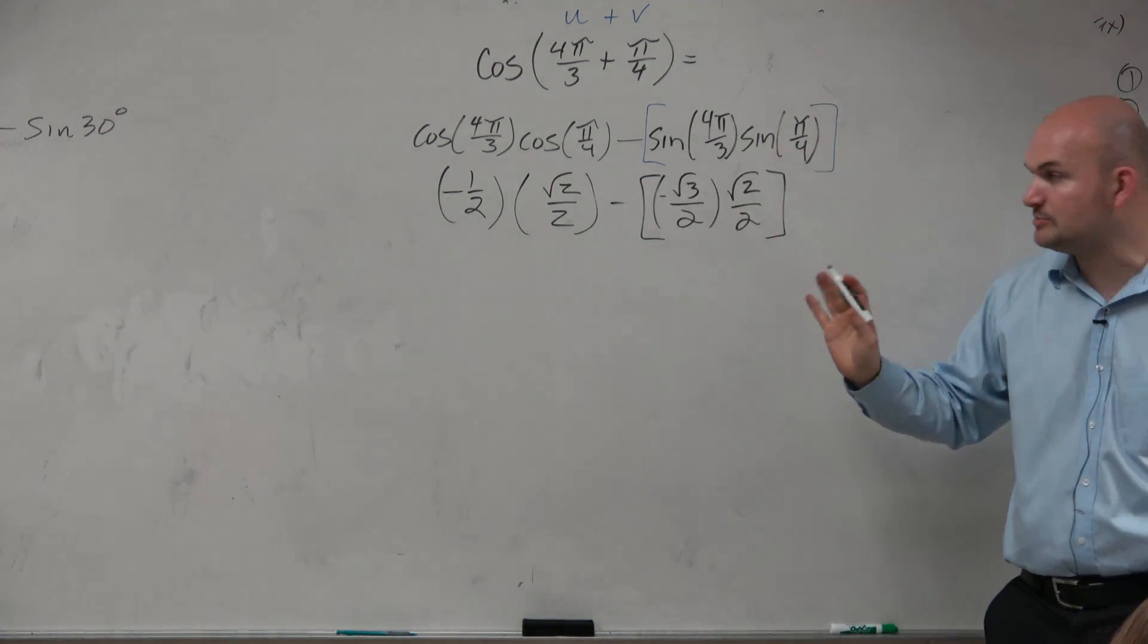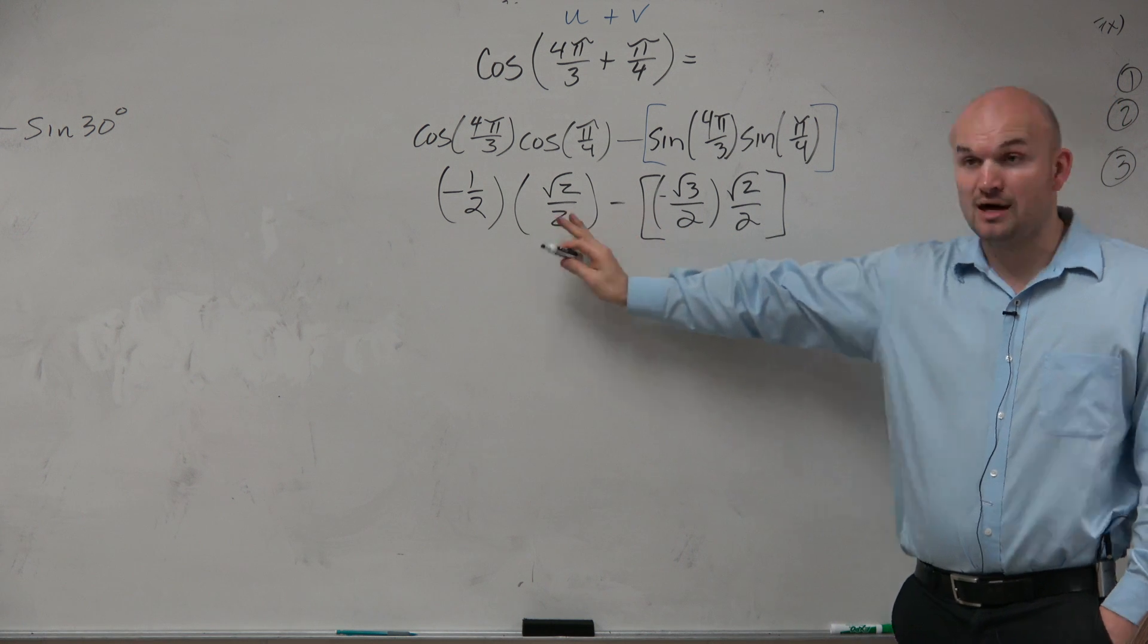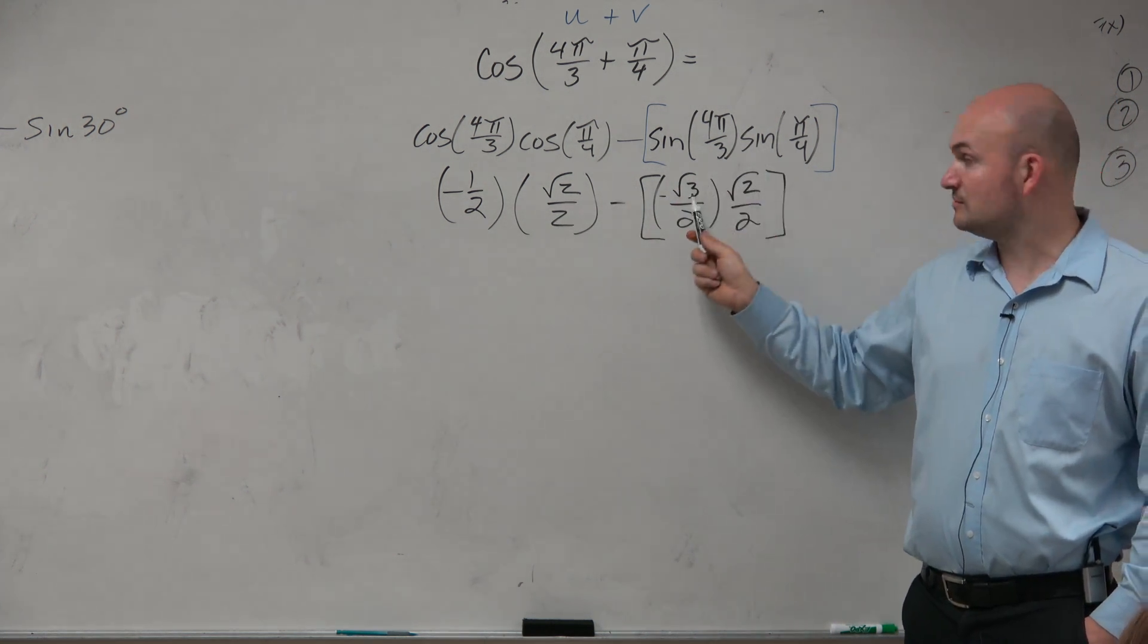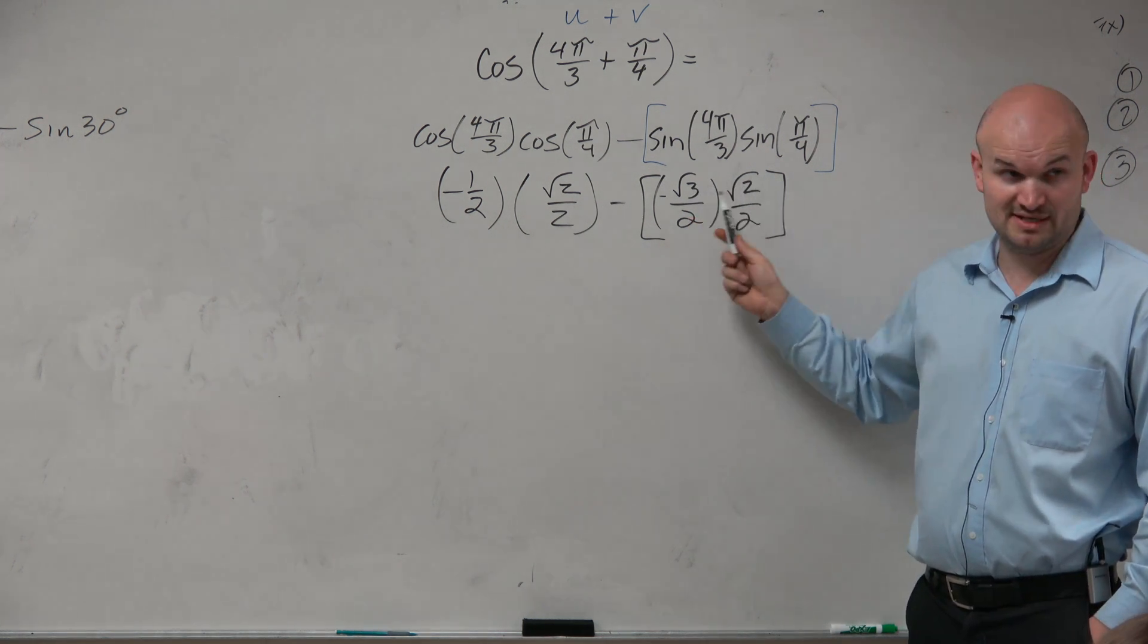Again, you don't really need to use the brackets, but if it helps you, please do that. Now we can simply multiply. Now there's a very important thing, guys. When you have terms in front or under the radical, as long as they have the same index, you can multiply these.